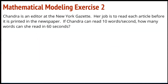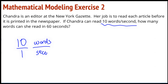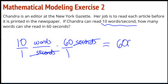Let's take a look at the second modeling exercise. Chandra is an editor at the New York Gazette — her job is to read each article before it's printed. If Chandra can read 10 words per second, how many words can she read in 60 seconds? I have a rate of 10 over 1, with words and seconds. I'm going to extend this and keep doing it for 60 seconds — the seconds are going to divide each other away, and I find 600 words in 60 seconds.